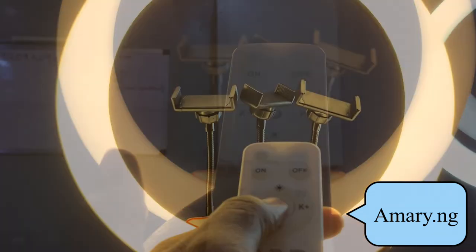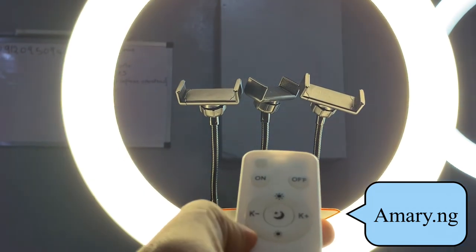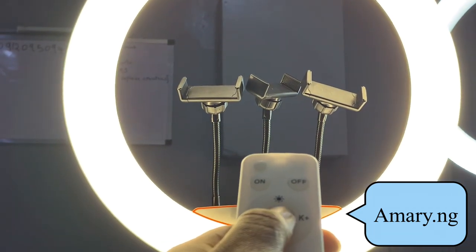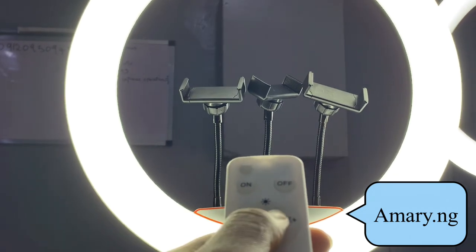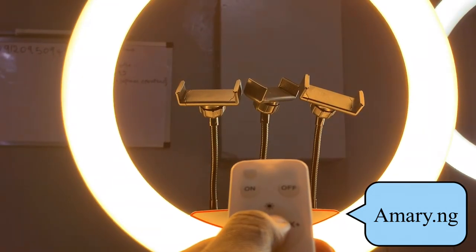And also it has the moon and the star in between. That is for changing the mood also, just for changing the mood of the ring light. As you can see,